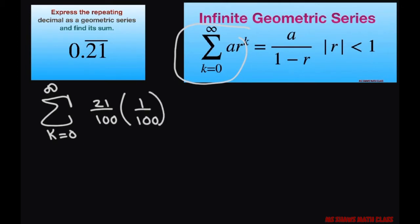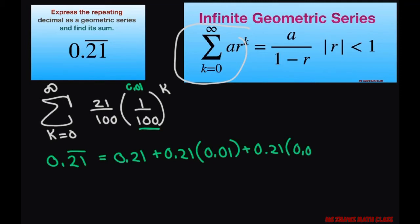This is to the k power. So expanding this, we're going to get 0 point repeating 21 equals 0.21 plus 0.21 times 0.01, which is what that is, and then plus 0.21 times 0.01 squared plus 0.21 times 0.01 cubed plus dot dot dot and so on.